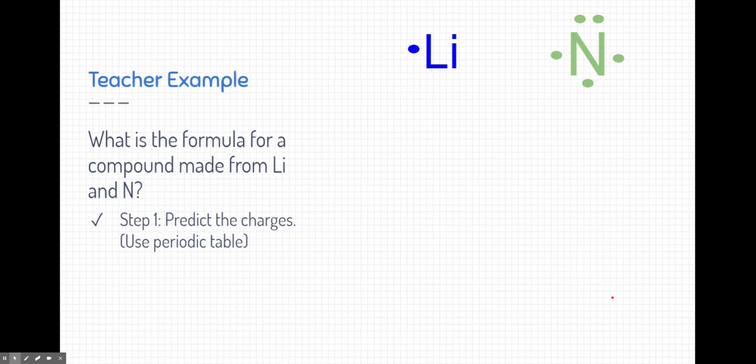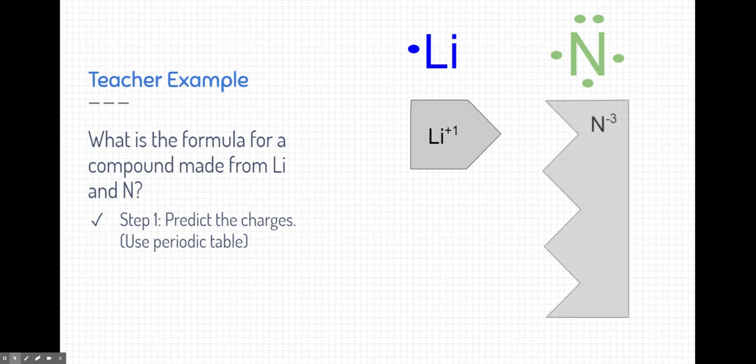Let's take a look at an example where the charges aren't one-to-one, where it's a little bit more challenging. Follow along with me here. The question is, what is the formula for a compound made from lithium and nitrogen? The first step you should probably do is use the periodic table and predict the charges. You can also do it based on the valence electrons, which I'm showing here. You can probably predict that lithium will become positive one because it's going to lose its valence electron. It's in the first column on the periodic table. Nitrogen is in the 15th column. It has five valence electrons. It's going to actually gain three valence electrons. So its predictable charge is negative three.